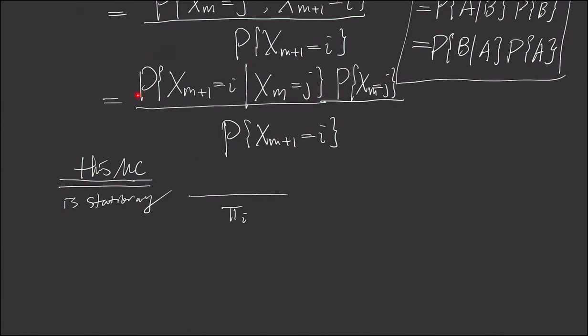Which means the denominator is nothing but just π_i. And the top, we have this term right here is nothing but the forward transition probability. And we just use the formula. This is simply P_ji, not ij.